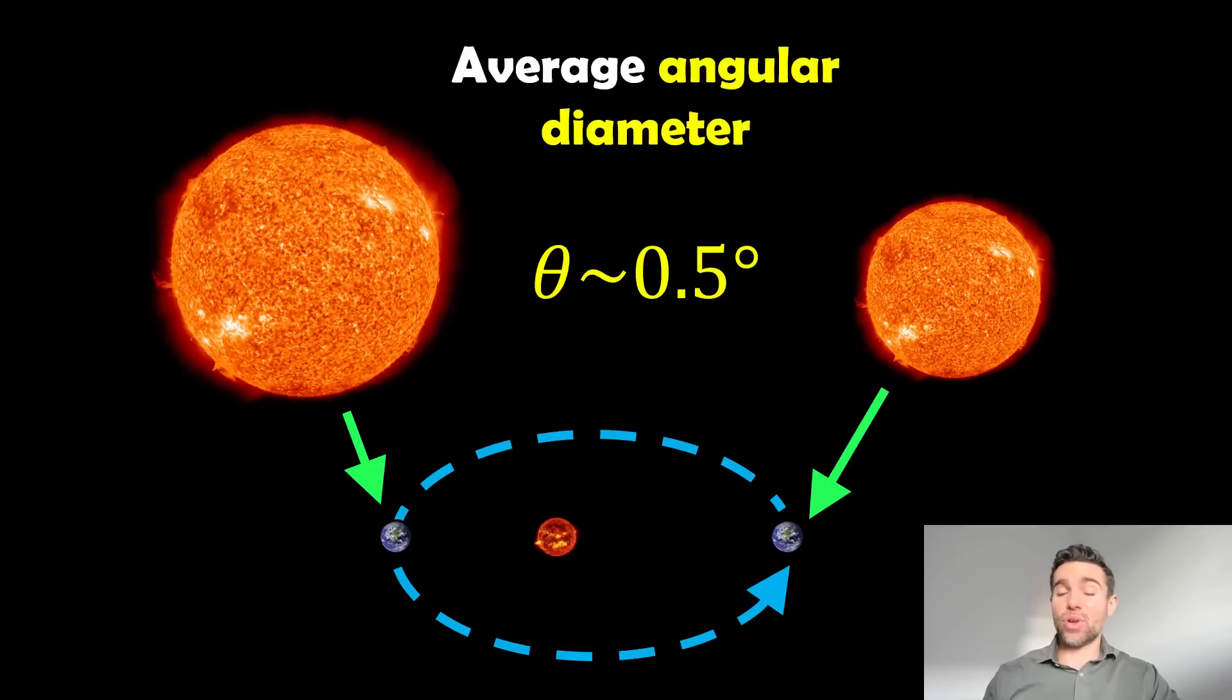Interestingly, that's pretty much the same angular diameter as the Moon, which is important for things like eclipses because they perfectly eclipse each other. About half a degree is our angular diameter. We've got the distance to the Sun as well.